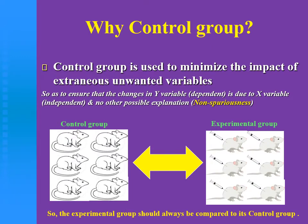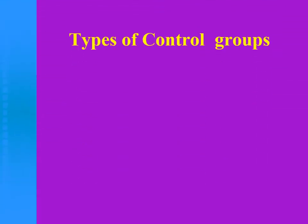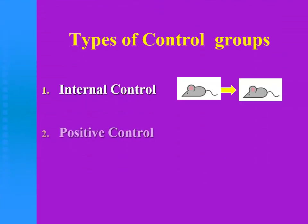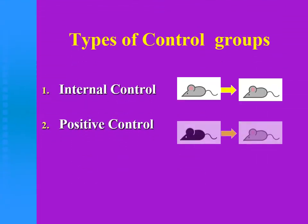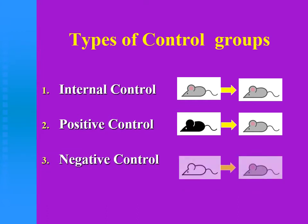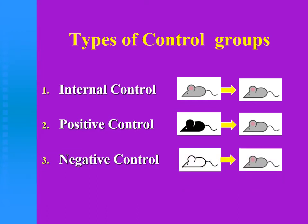So the experimental group should always be compared to the control group. The types of control groups are: internal control, positive control, and negative control. We will discuss each of these groups.